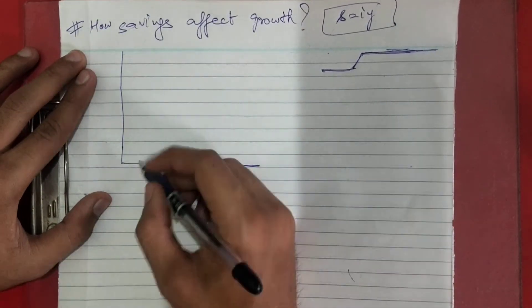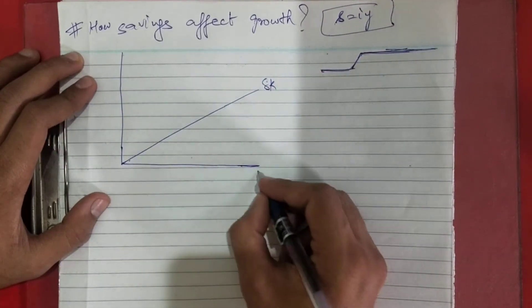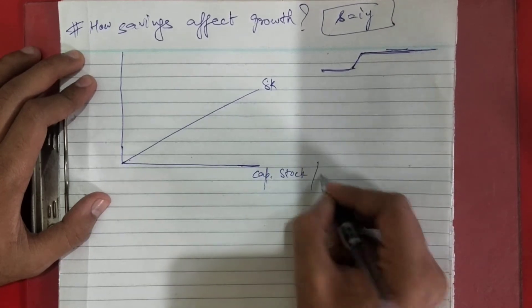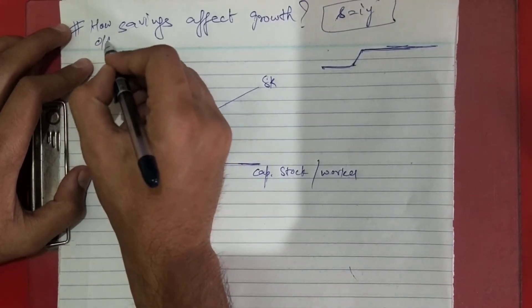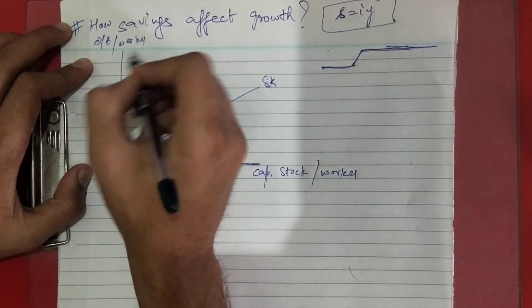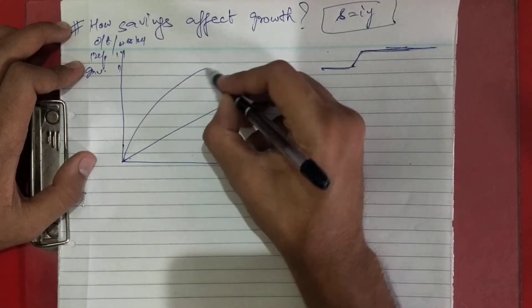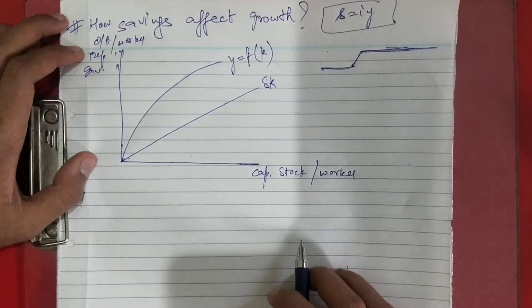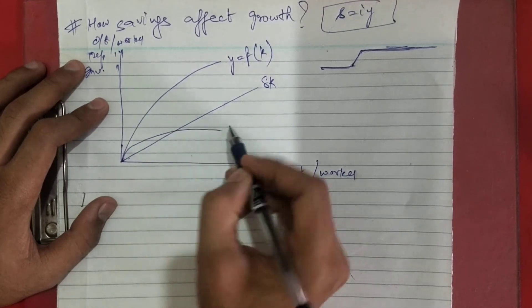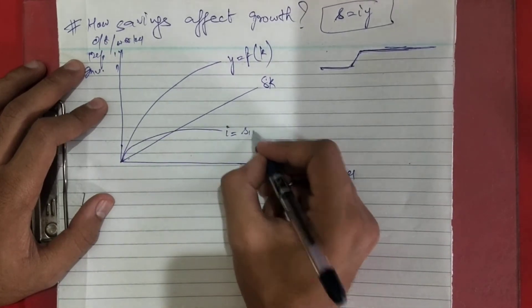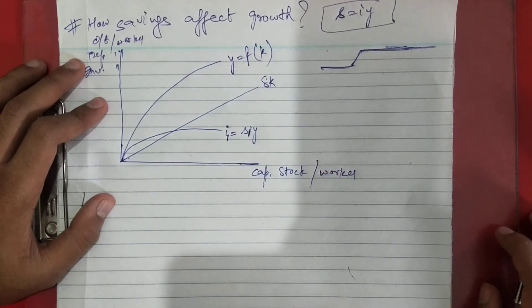Let's come to the graph, because the graph tells us more than anything. This is your delta, depreciation. This is your capital stock per worker. Three things will appear on the axes: output per worker, depreciation per worker, and investment per worker.